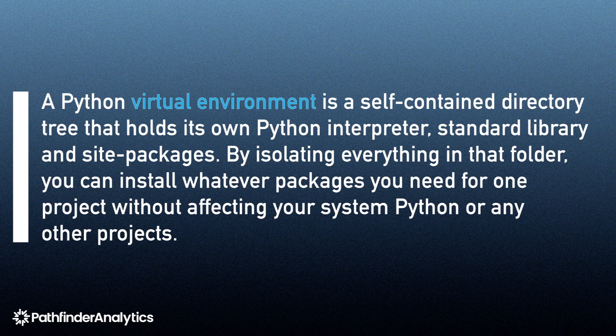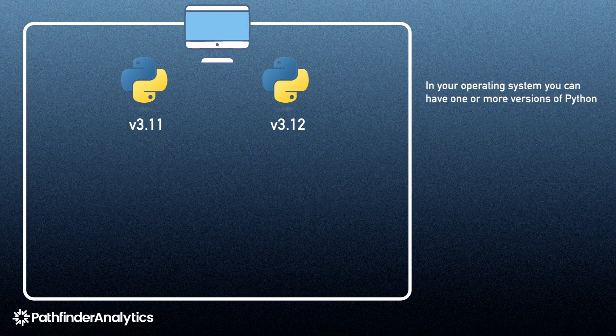Let me try to explain this visually. In your local operating system, you can have one or more versions of Python installed. These are global installations, sometimes referred to as base interpreters or system-installed Python versions. Let's say you have two versions of Python installed: version 3.11 and 3.12.